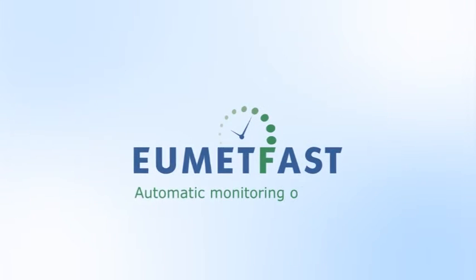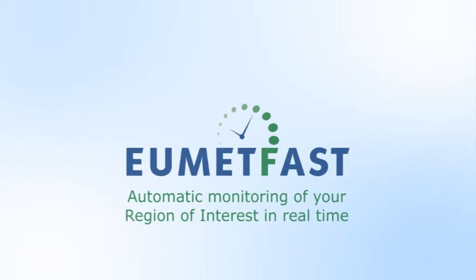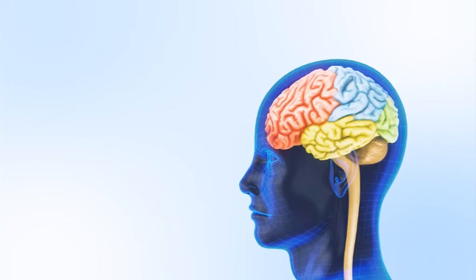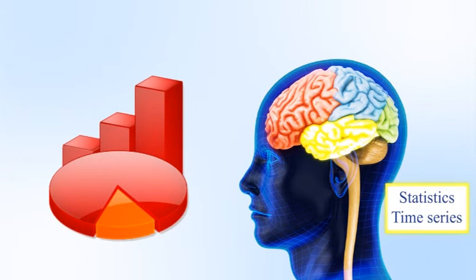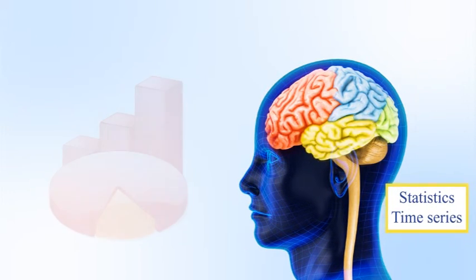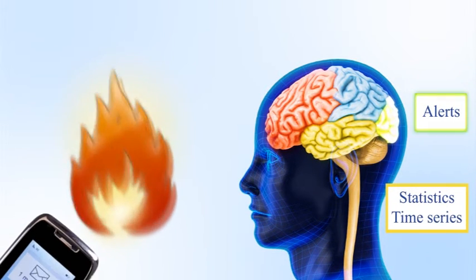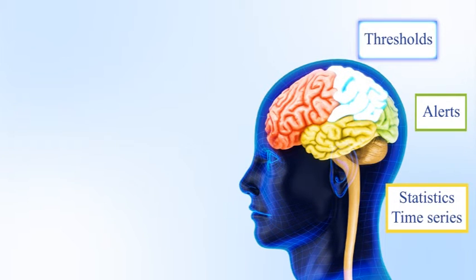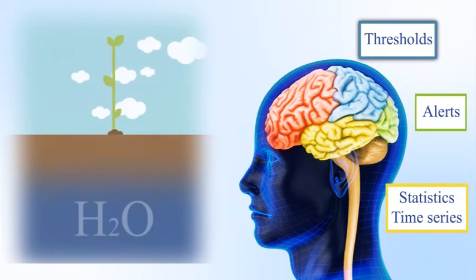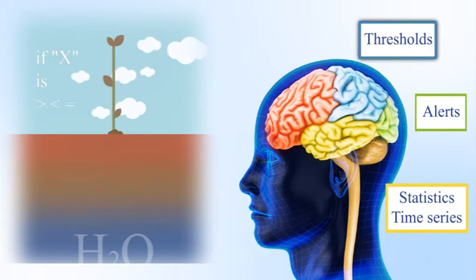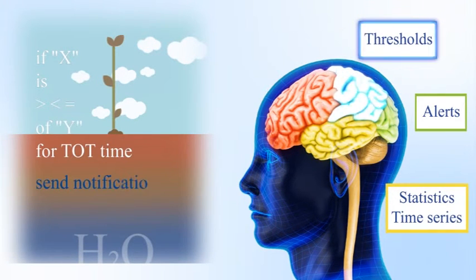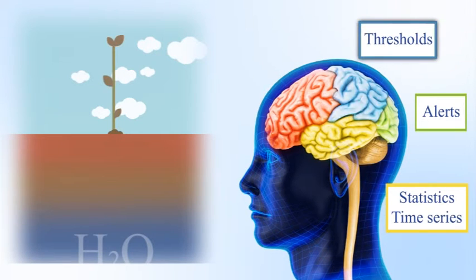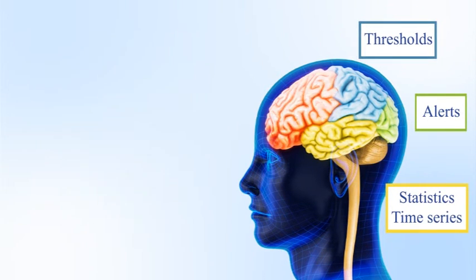EumatFast: automatic monitoring of your region of interest in real time. EumatFast makes it possible to calculate and export statistics and time series. Receive customized alerts in real time. Set your own customized thresholds beyond which you receive notifications — for example, if soil moisture falls below X for a set time, send me a notification — or receive real prescription maps.